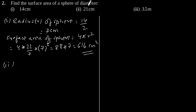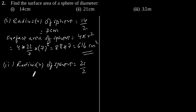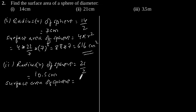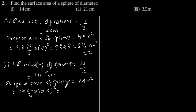Now the second part: given diameter is 21 cm, so radius r of sphere is equal to 21/2, which is equal to 10.5 cm. Again using the formula of surface area of a sphere, which is 4πr², and putting the value of r, we will get 4 into 22/7 into 10.5², which is equal to 1386 cm².